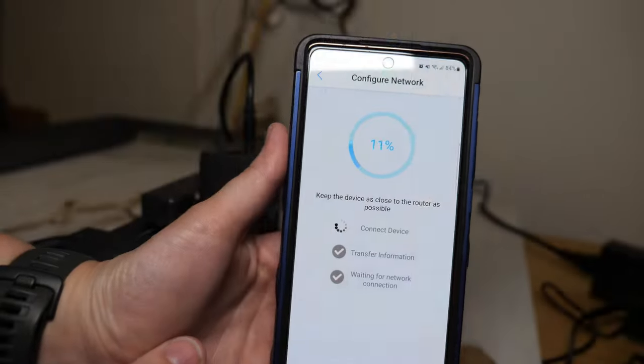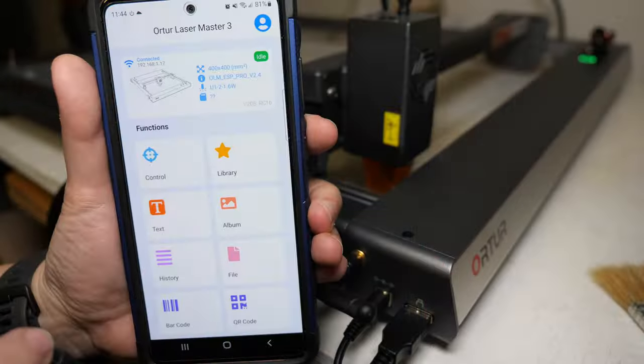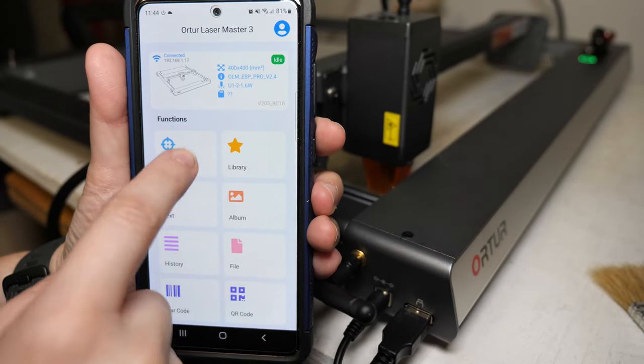Once the laser is connected, you can set it up and run a job on the app using the built-in text function or the image library.